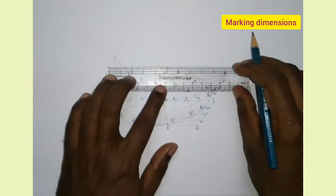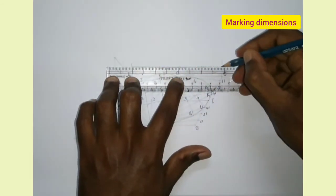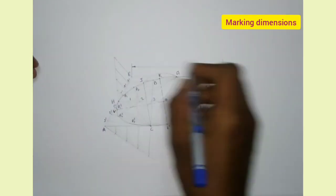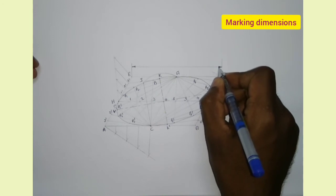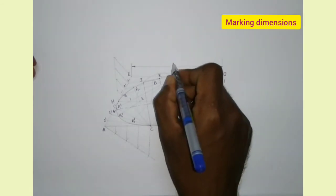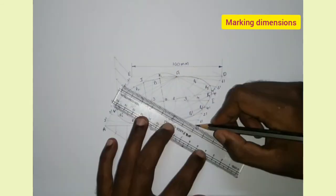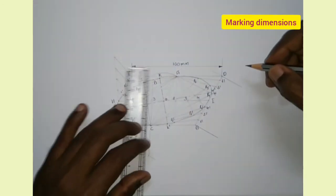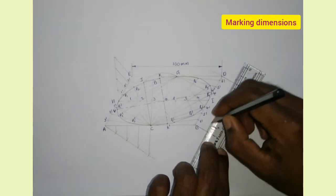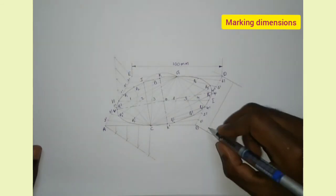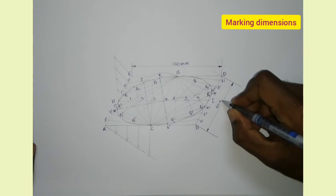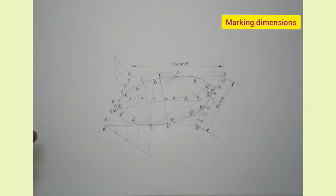Now I am marking the dimensions: 100 mm for the length and 60 mm for the side. We have to mark the angle also, that is 60 degrees.